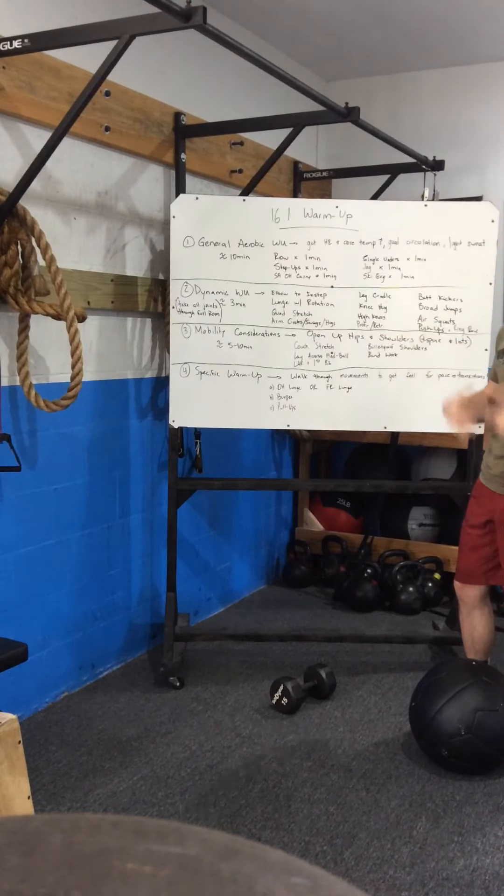And then finally, the specific warm-up. Think about this in terms of walking through the movements that you're actually going to do in the workout. Depending on if you're going with the overhead walking lunge or the front rack lunge, you want to make sure that you practice that. Burpee—this is a good time to get a feel for your burpee pace in your transitions.